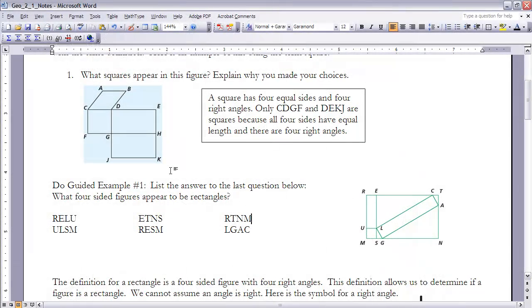In the example number one up here is this word appear to be. The word appear means that although we may not know exactly that it's a square or exactly that it's a rectangle, it looks like it might be that figure.